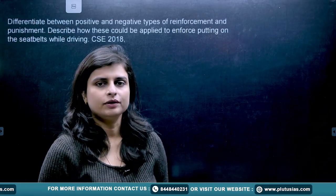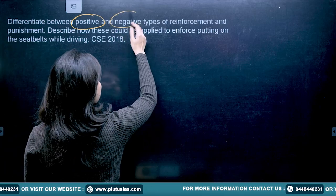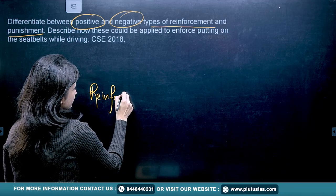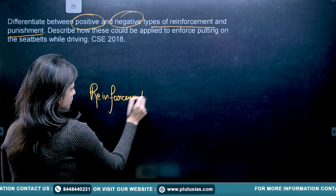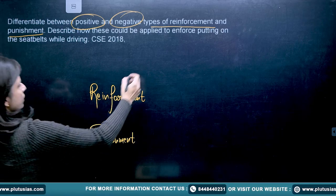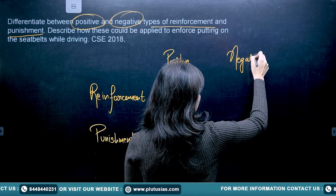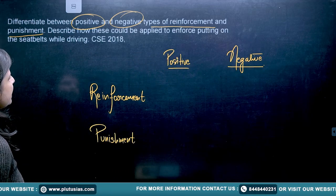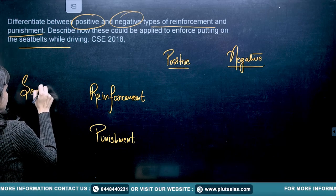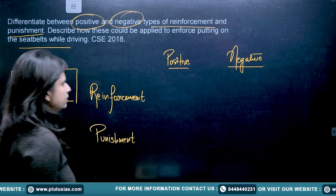Now let's move on to the second question. The second question says: differentiate between positive and negative types of reinforcement and punishment. What you can do here is write out reinforcement and punishment, then positive and negative under each. They also say: describe how these could be applied to enforcing putting on the seat belt while driving. So the question needs to be answered with respect to seat belt usage.